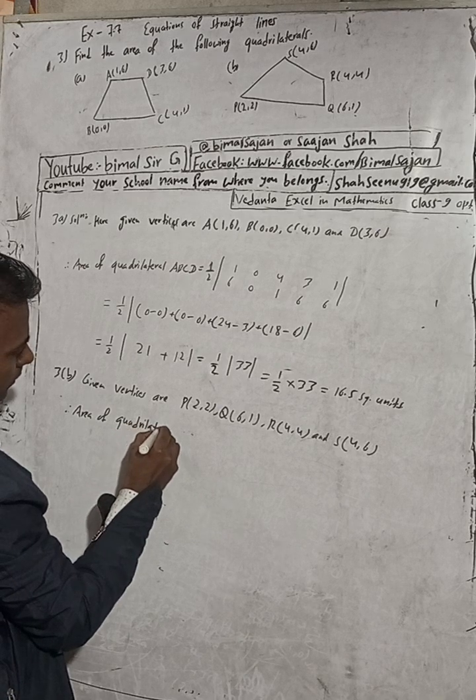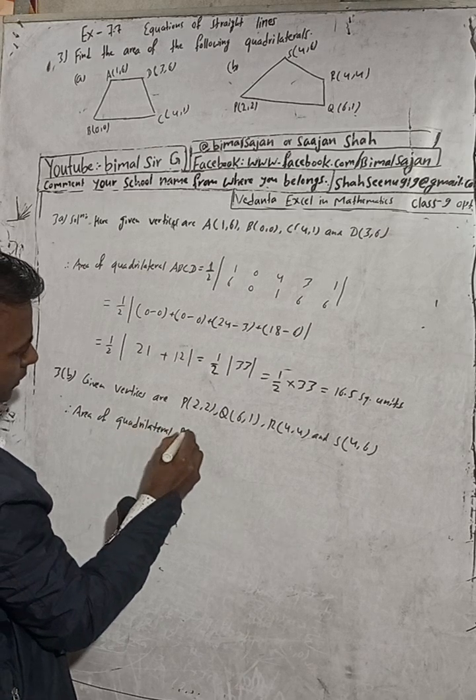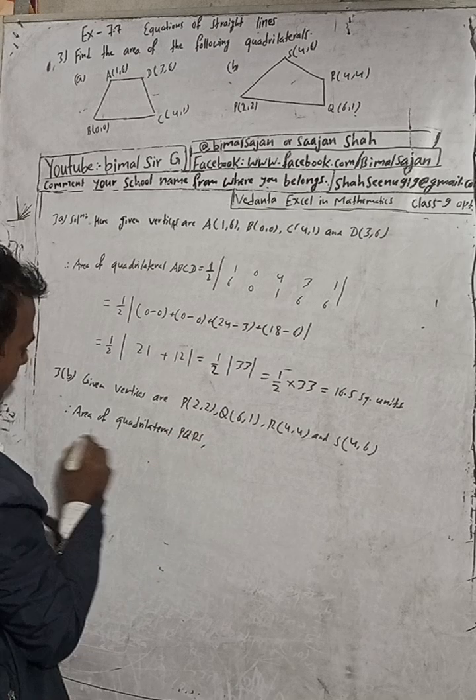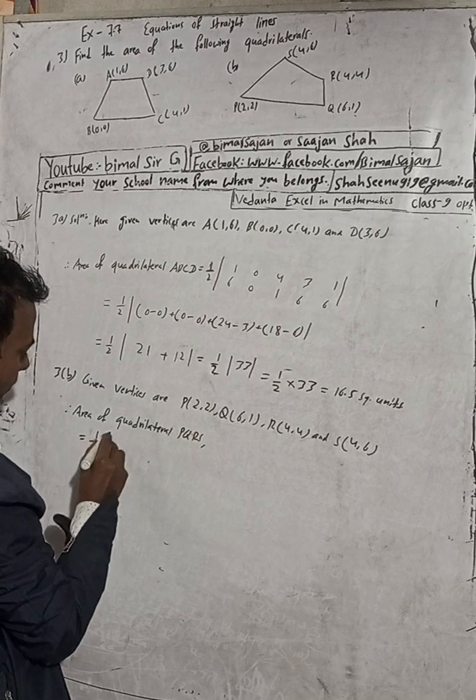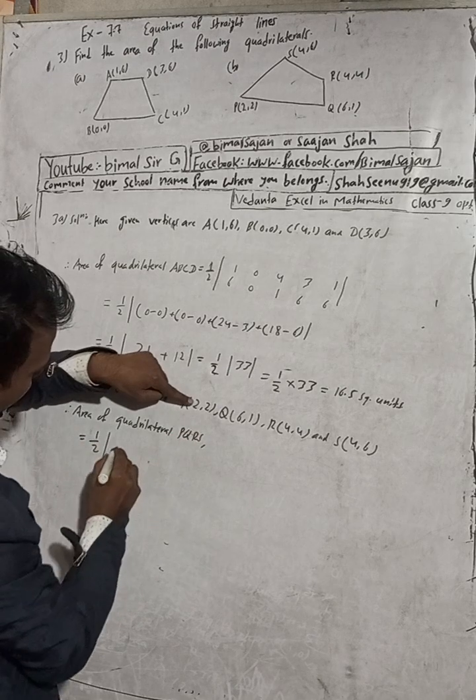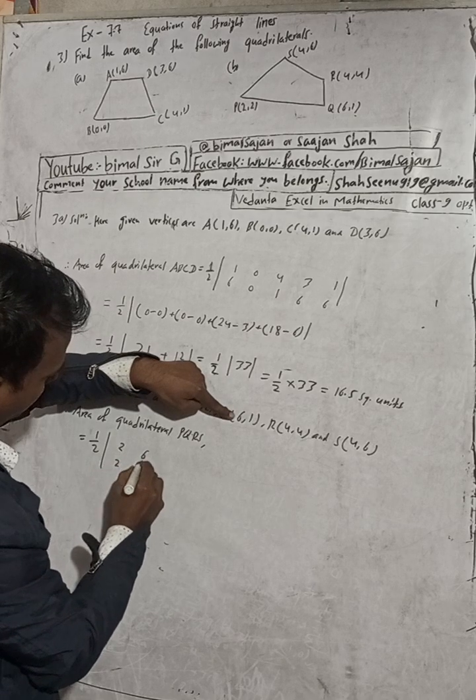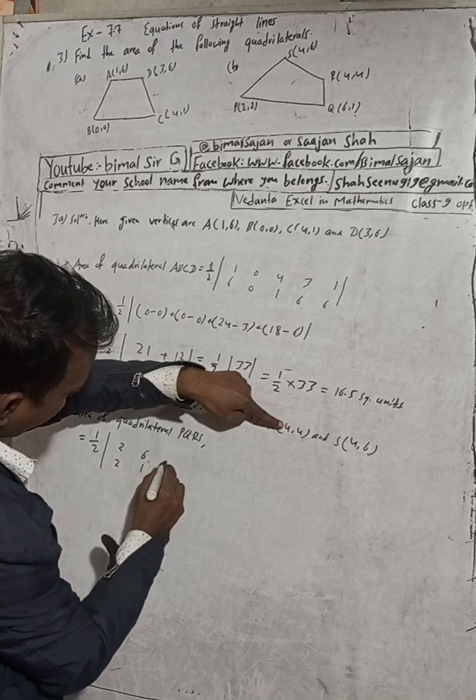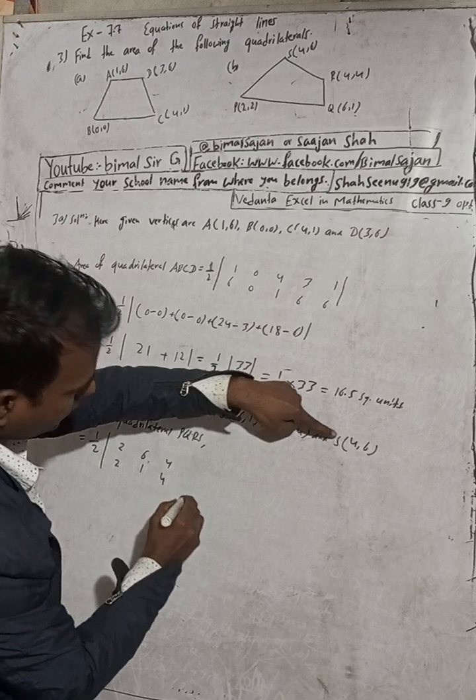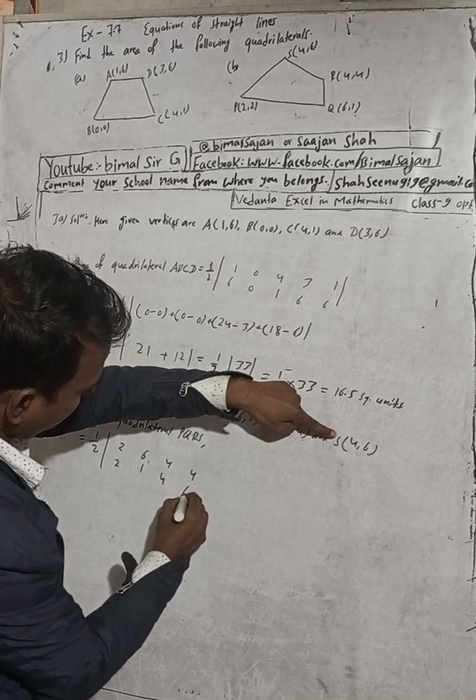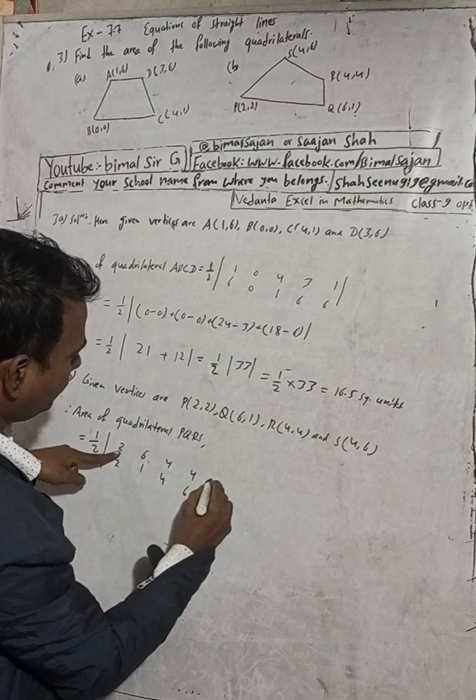1 by 2 modulus. The coordinates are 2,6; 1,4; 4,6. Then repeat this point here.